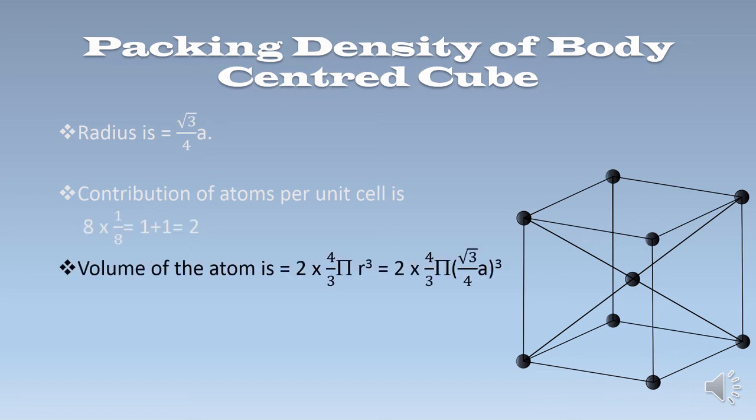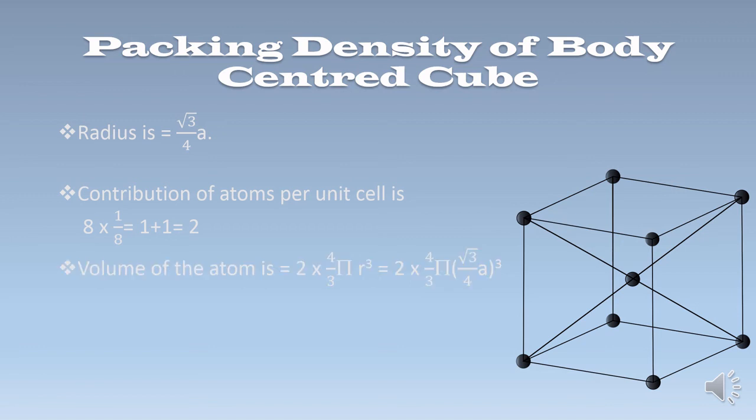Next, the volume of the atom is 2 × (4/3)πr³, where R is the radius of the sphere, equal to √3/4 × A. Putting the value of R, we get 2 × (4/3)π × (√3/4 · A)³. This is the volume of atoms per unit cell.